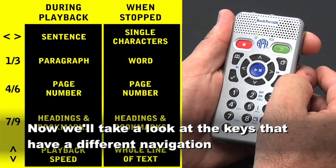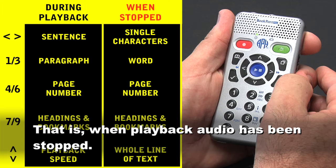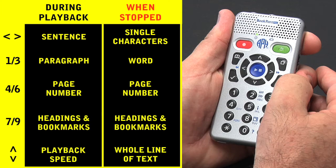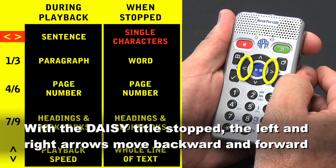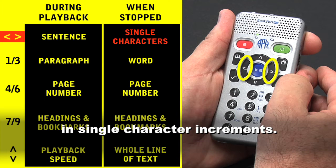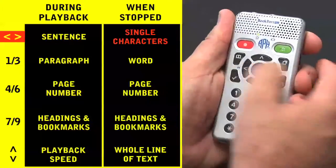Now we'll take a look at the keys that have different navigation when the Bookport Plus is not in playback mode — that is, when playback audio has been stopped. With the Daisy title stopped, the left and right arrows move backward and forward in single character increments. Keith operates the Bookport Plus to demonstrate the steps described by the narrator.